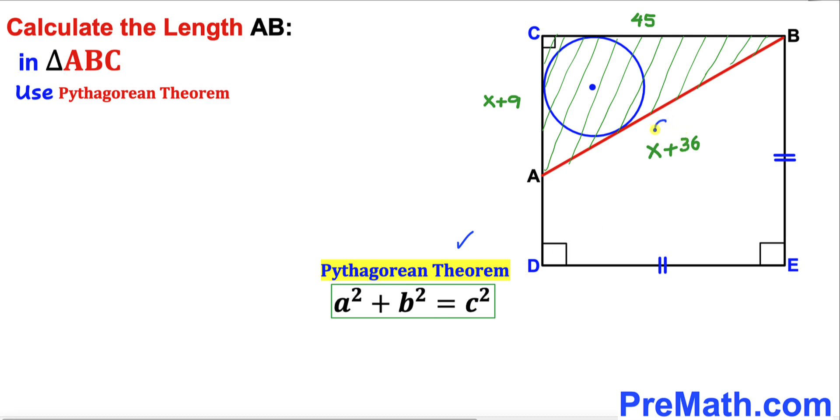Let me call this longest leg side c, this side a, and this side b. So let's fill in the blanks in this Pythagorean formula.